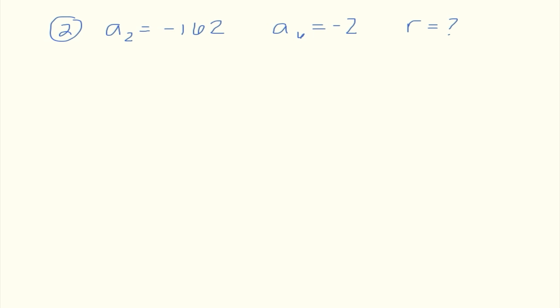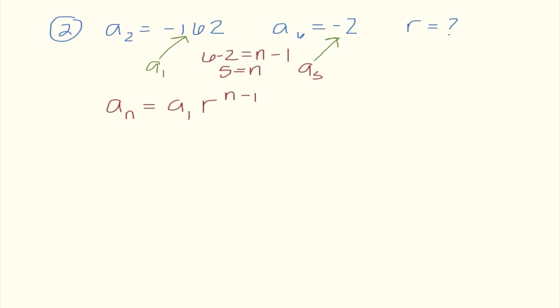Number two, we're trying to find the ratio again, but what makes this one difficult is that they do not tell me what a sub 1 is. We ran into this with arithmetic sequences where we had to use some temporary values. I'm going to say the given term is our temporary a sub 1. I know 6 minus 2 has to equal our new term minus 1, so I get 5 as this new term in the sequence. Using a sub n equals a sub 1 times r to the n minus 1 power, I write negative 2 equals negative 162 times r to the 5 minus 1 power.